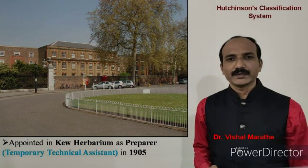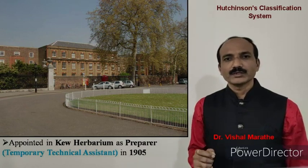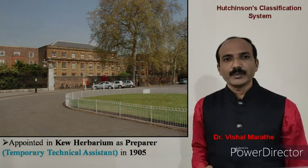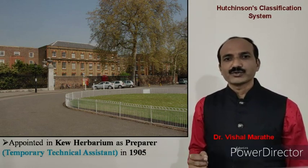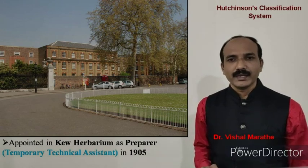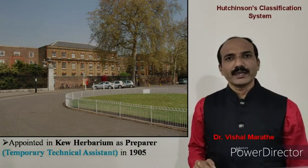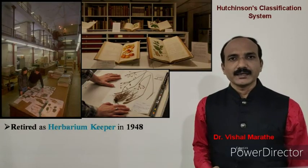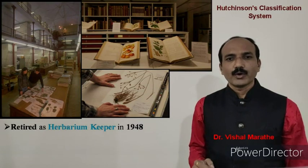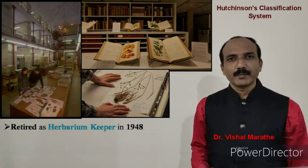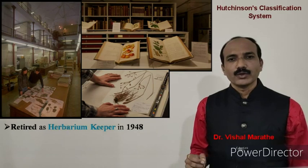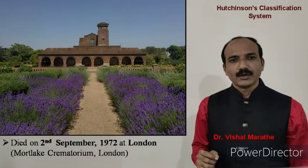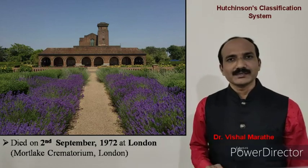He was very expert in taxonomy and also a very fine artist. Because of this, his taxonomic and drawing skills were soon noticed and he was appointed in the herbarium of Kew Botanical Garden in 1905. He retired in 1948 from Kew Herbarium as herbarium keeper but continued working on the phylogeny of flowering plants until his death on 2nd September 1972.